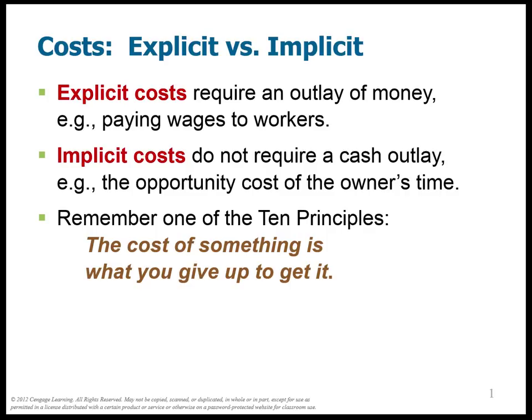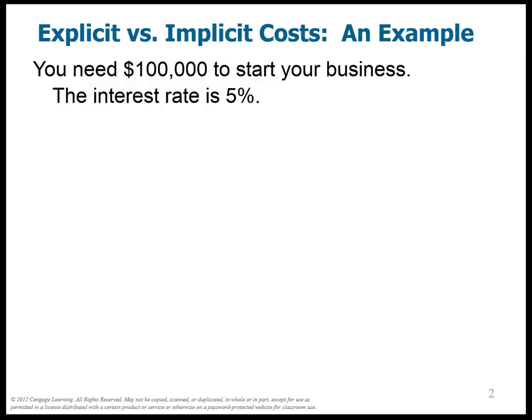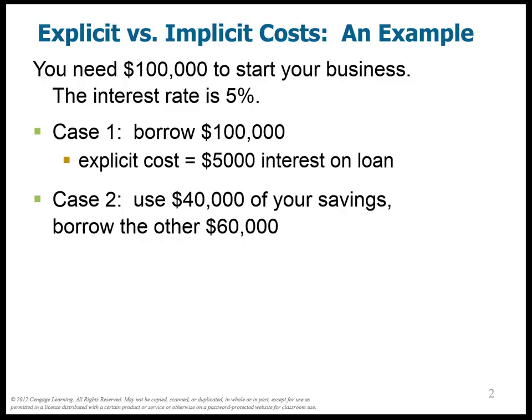Both of these matter for the firm's decisions. Here's an example. Let's say you need $100,000 to start your business and the interest rate is currently 5%. The first thing you could do is borrow $100,000 from a bank. The explicit cost here would be $5,000 interest on the loan — $100,000 at the 5% rate of interest. So it's going to cost you $5,000 interest on the loan. That's the total cost in Case 1: $5,000.